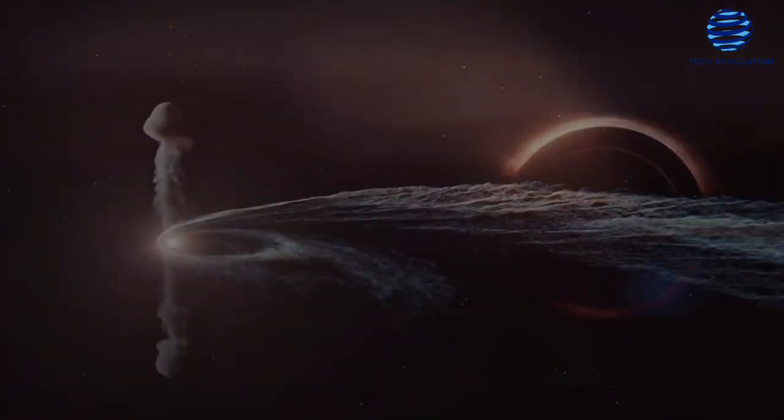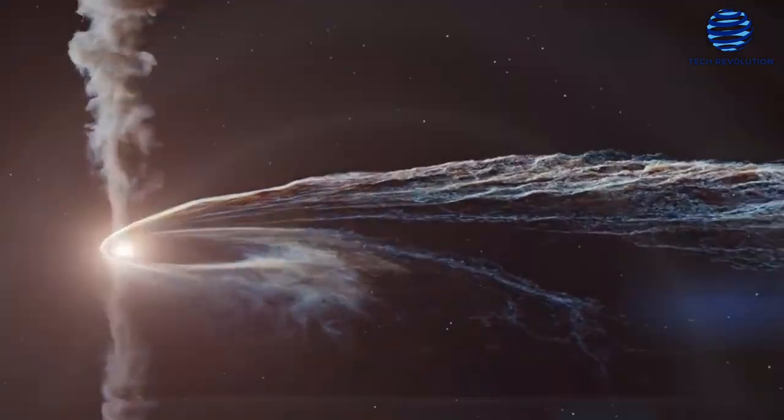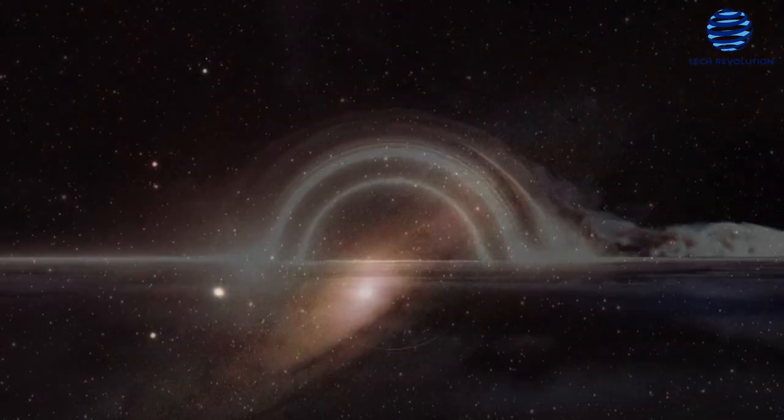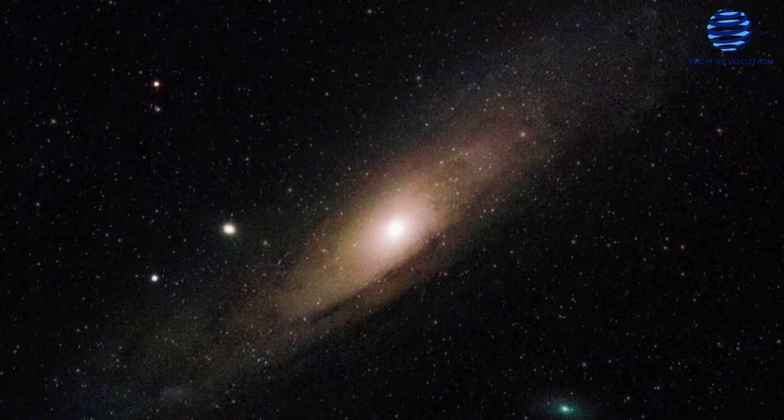Black holes, predicted by Albert Einstein as part of his general theory of relativity, are, in some ways, the polar opposite of what their name implies. Rather than being an empty hole in space, black holes are the most dense, thickly packed regions of matter unknown.